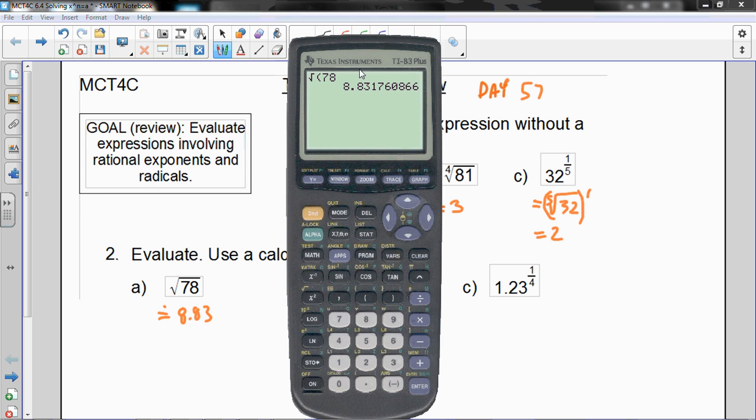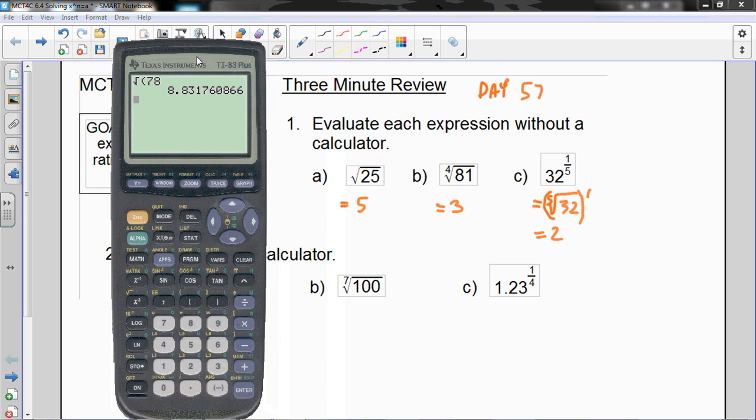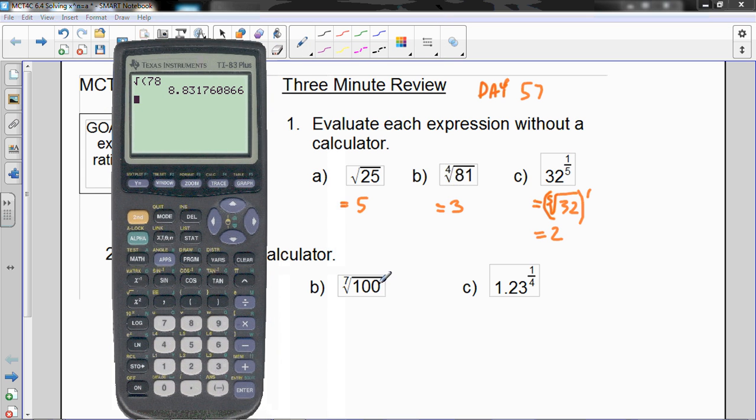Where it starts getting tougher is when we do these other roots, so this is the 7th root of 100. Some number times itself 7 times gives us the answer of 100, and how we do it on this old school, or this new school calculator, is we put it in somehow. It reads exactly the way we're going to put it into the calculator.